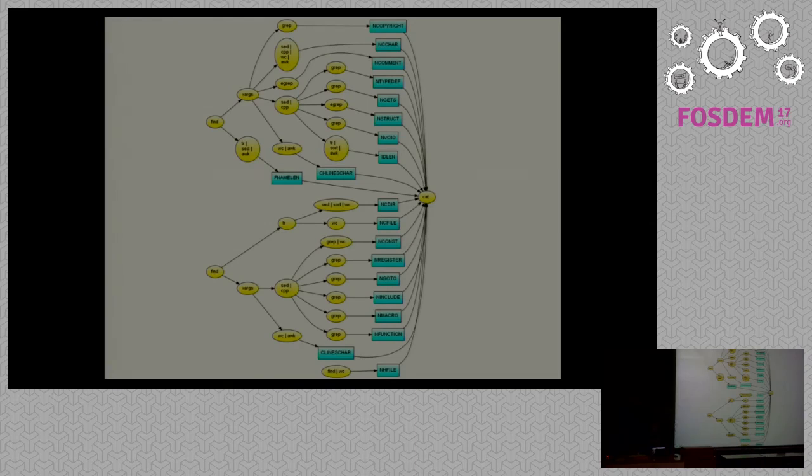But as you see, this is not a linear pipeline. It is a graph. So how can we do that? How can we program such a graph with the Unix shell?